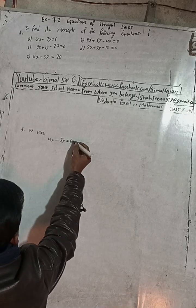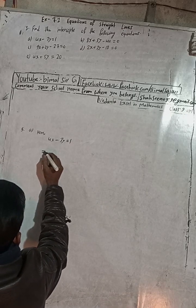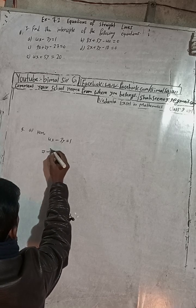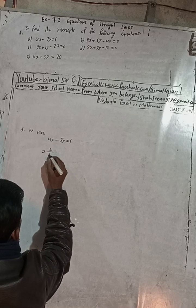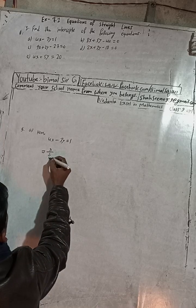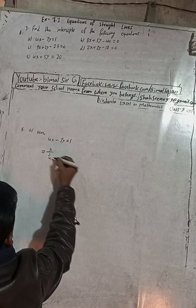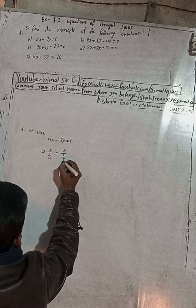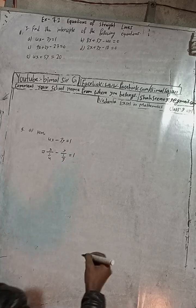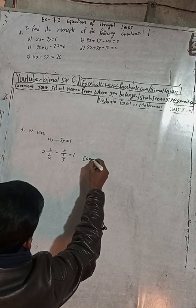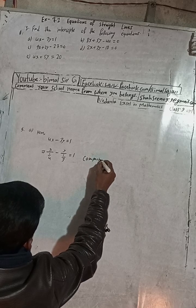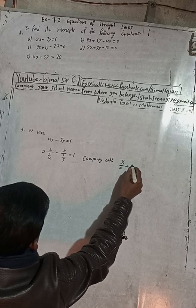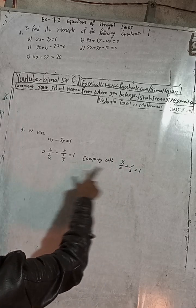You can write this equation using 1 on the right side. This is the reference line form. Write 1 on the right, then arrange: 4x by 1 gives us x divided by 1/4, and this y and 3 can be written as y divided by 1/3, which equals 1. Now comparing with x/a + y/b = 1.